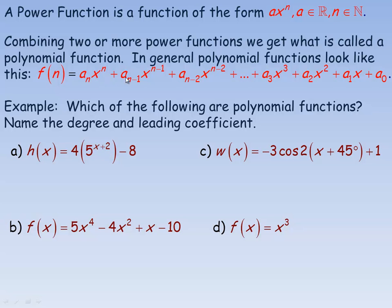In general, polynomial functions have this form. The a sub n times x to the power of n represents the highest power term, because n is bigger than n minus 1 or n minus 2. So you write them from the highest power of x to the lowest. This is listing successive terms from highest power to lowest, right down to a constant at the end. The linear term would be a1x, and the quadratic term has x squared.